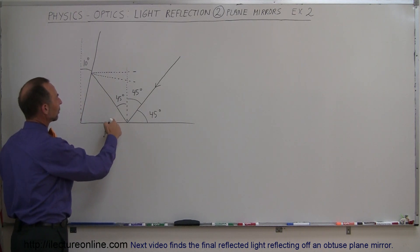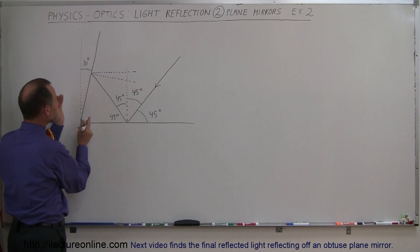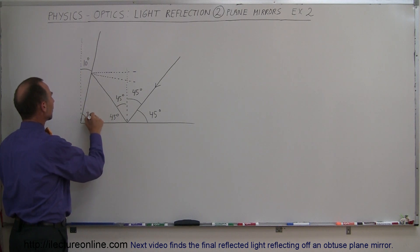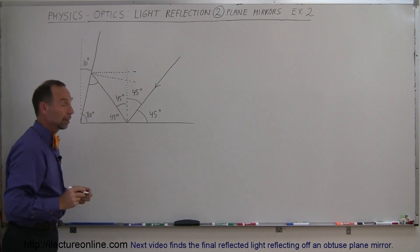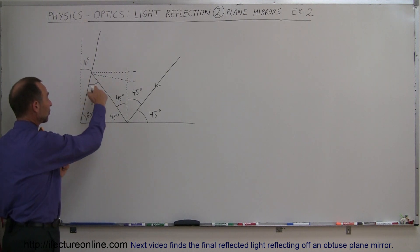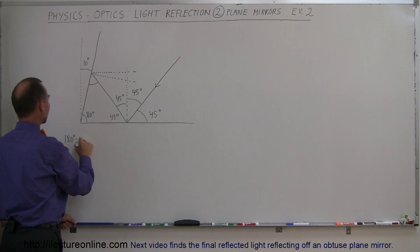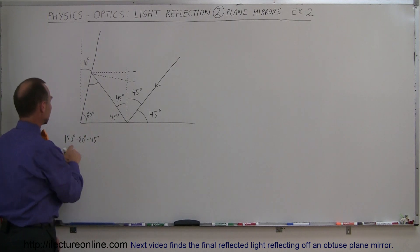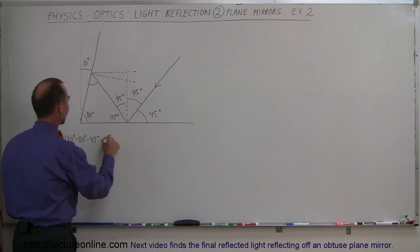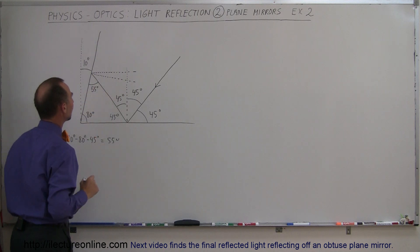We know that this angle is 45 degrees, and this angle here, instead of being 90 degrees, is now only 80 degrees because the mirror is tilted 10 degrees. That means we can figure out the third angle of the triangle, because the sum of the three angles must add up to 180 degrees. So 180 minus 80 minus 45 makes this angle equal to 55 degrees.